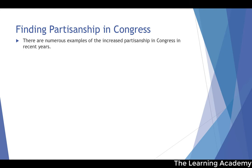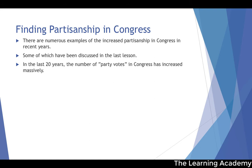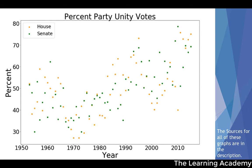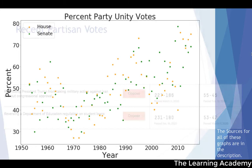When it comes to finding partisan problems in Congress, there are numerous examples in recent years. In the last 20 years, what we call party votes — votes effectively down party lines where the vast majority of Democrats vote one way and the vast majority of Republicans vote another — have increased massively. Looking at this data, the number of party unity votes has increased from the 2000s. In the late 2010s and early 2020s, we're seeing 70% and up to 80% of votes being partisan votes.